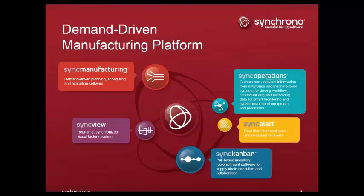Synchrono has a portfolio of systems that work independently or collectively in demand-driven environments. Starting from the upper left and moving clockwise, we have Sync Manufacturing, which is an adaptive planning, scheduling, and execution system. We have Sync Operations, which enables the Internet of Things — it aggregates and analyzes data from systems and machines, and has a data historian as well as workflow automation capabilities. Sync Alert is a real-time alert notification and escalation package. Sync Kanban is our eKanban system — a pull-based inventory replenishment solution for supply chain execution and collaboration. And finally, the subject of today is SyncView.